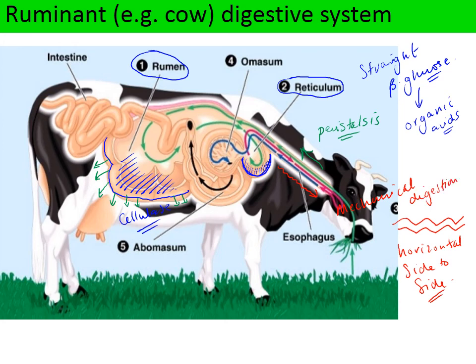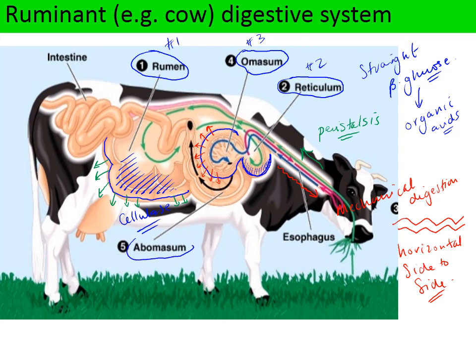The cud then gets reswallowed back down the oesophagus, but this time it doesn't go into the rumen. It goes into chamber three, called the omasum, where water from the plant vegetation gets absorbed into the cow's blood. What's left of the cud then gets passed into the fourth chamber, called the abomasum.